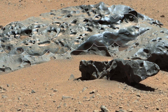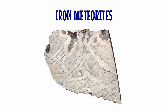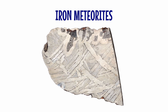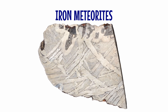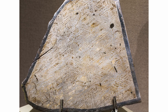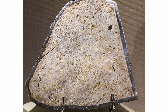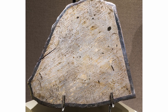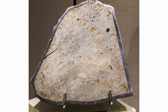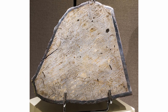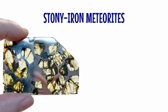Iron meteorites can tell us a great deal about how the metallic cores of planets formed. They are mainly made of an iron-nickel alloy with a distinctive crystalline structure known as Widmanstätten texture. Bands are formed by varying levels of nickel, and there can be wide variation in the texture and mix of minerals present within iron meteorites, which produces many groups and subtypes.